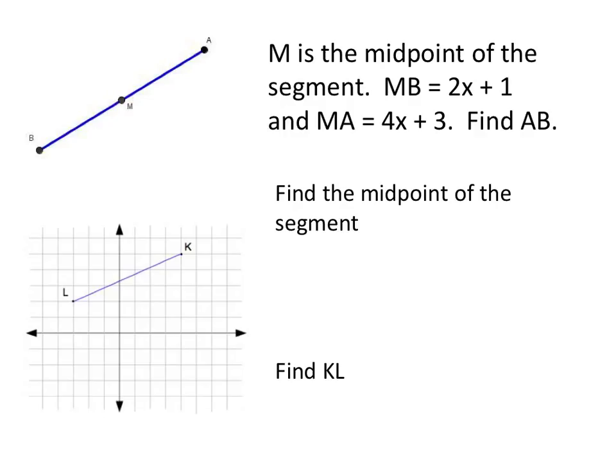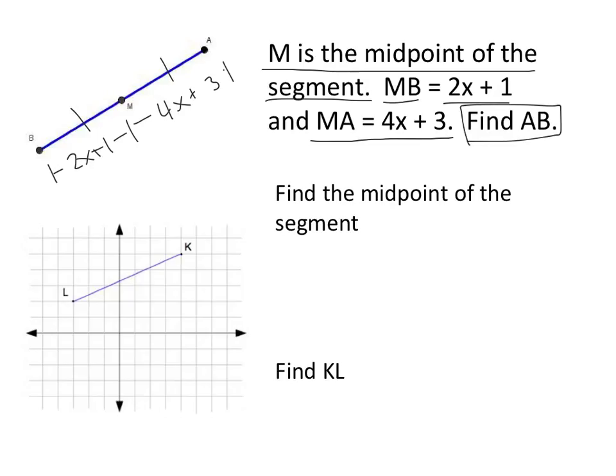Every problem, see if you can mark up your diagram. So if I know that M is the midpoint of the segment, I'm going to put tick marks on here. Those tick marks mean they're equal. The distance between M and B is 2X plus 1. So write 2X plus 1. The distance between M and A is 4X plus 3. So write 4X plus 3. Find the distance between A and B. So we need to find this whole distance. So if I know that this is the midpoint, these two segments are equal. I'm going to set them equal and solve for X.